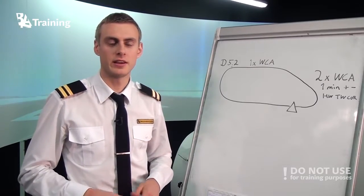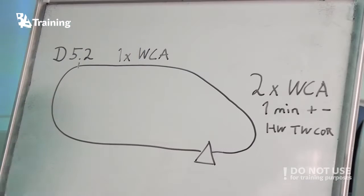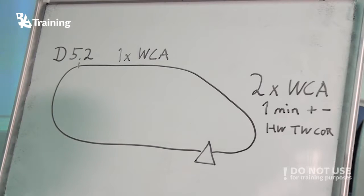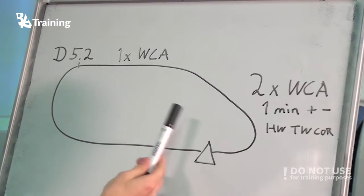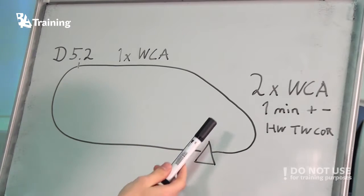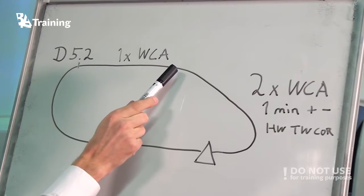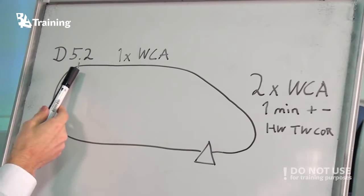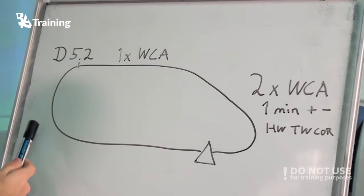As mentioned before, the outbound leg can be determined by either time or distance from DME equipment. In this case, the outbound leg is determined by distance from DME. The method is pretty much the same — when we reach the fix, we start the turn and apply double wind correction. Fly for one minute, making a correction for headwind or tailwind. After the time, we fly with single wind correction angle until we reach 5.2 DME, then start the turn towards the inbound leg.